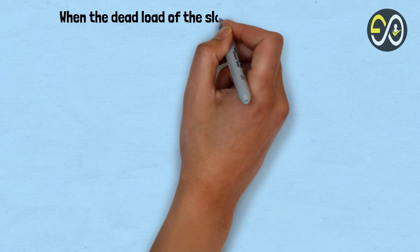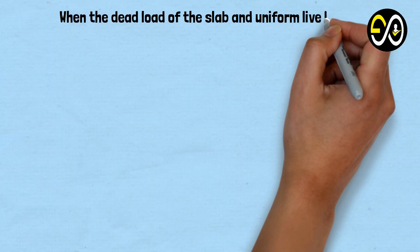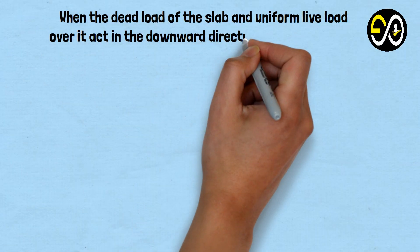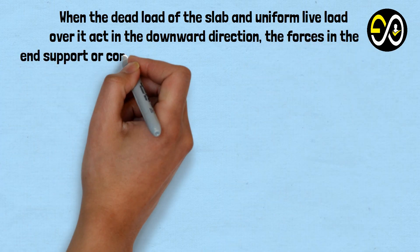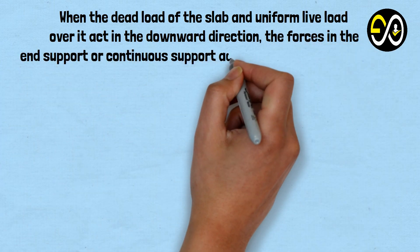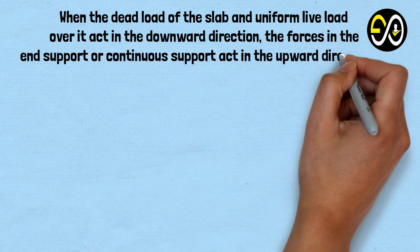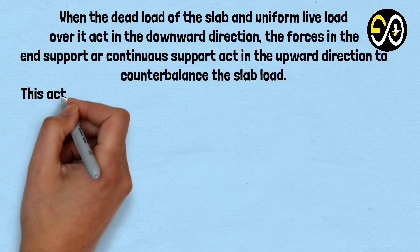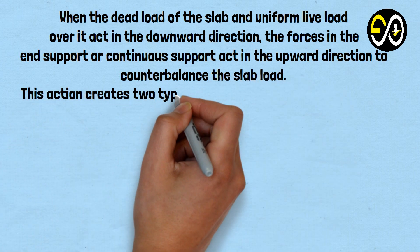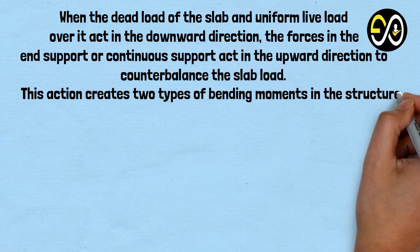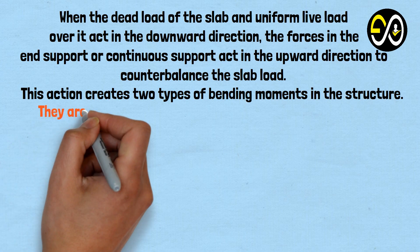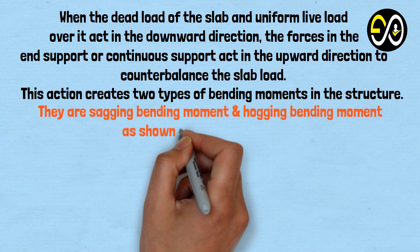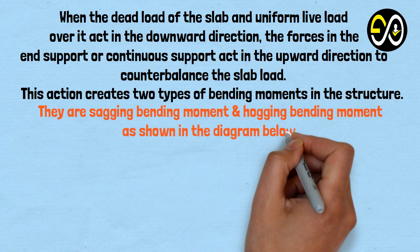When the dead load of the slab and uniform live load over it act in the downward direction, the forces in the end support or continuous support act in the upward direction to counterbalance the slab load. This action creates two types of bending moments in the structure: sagging bending moment and hogging bending moment, as shown in the diagram below.